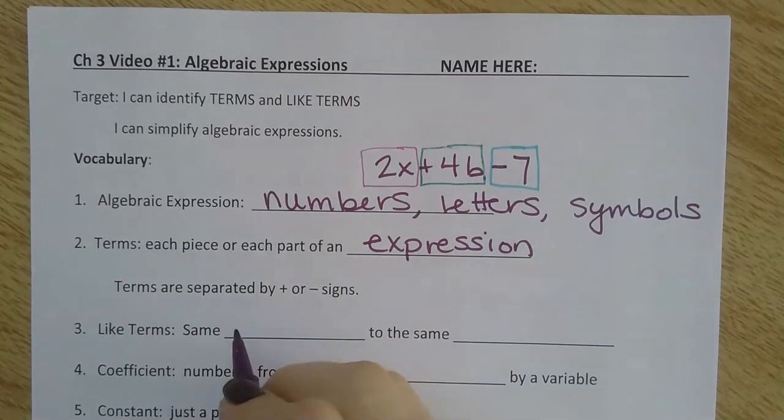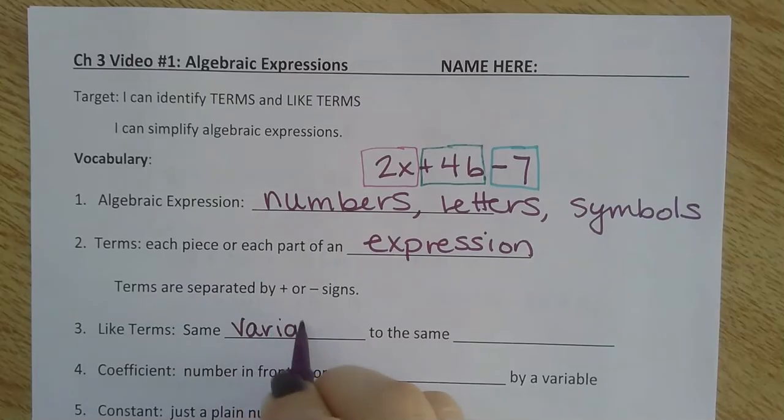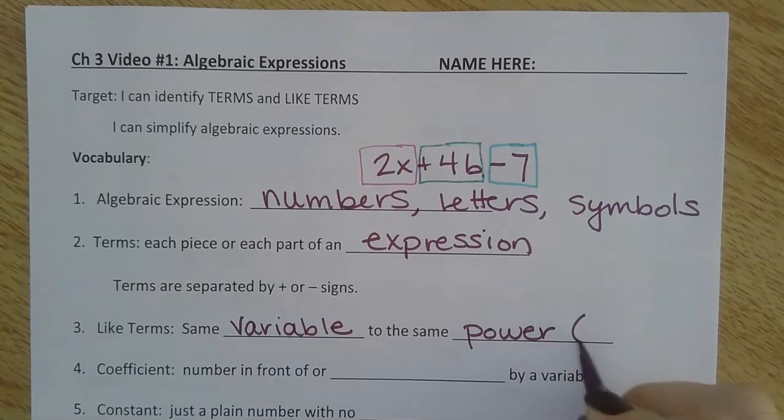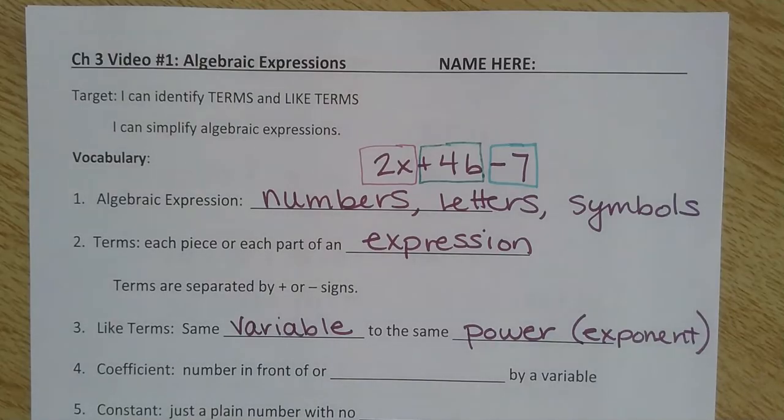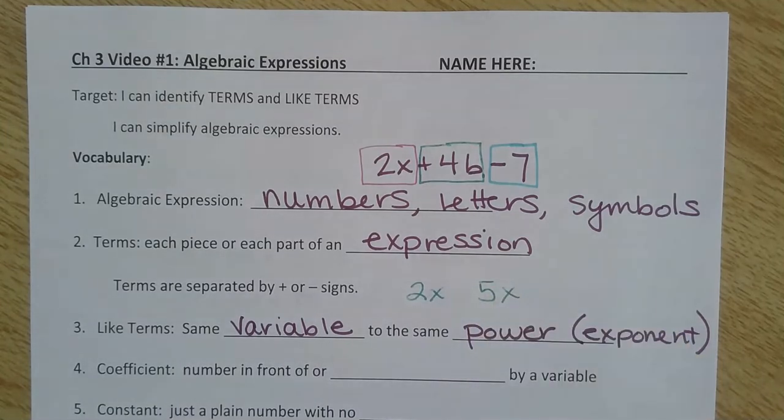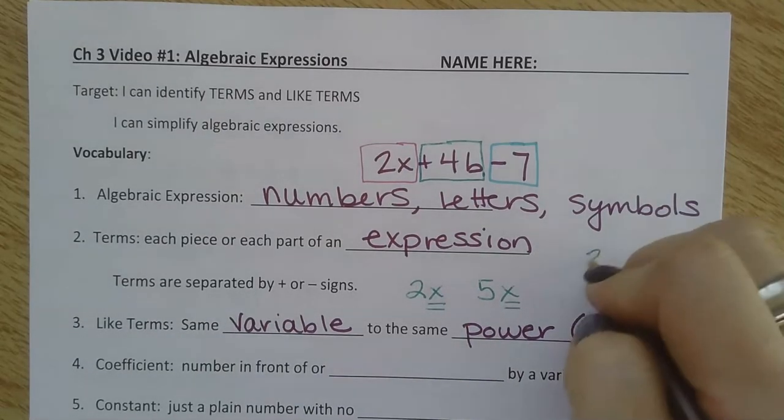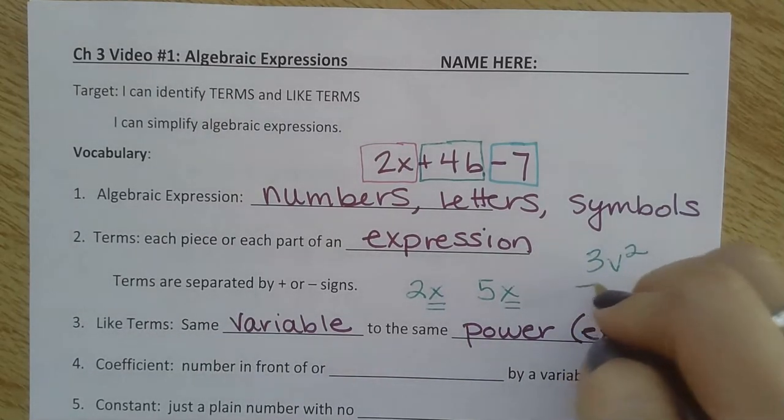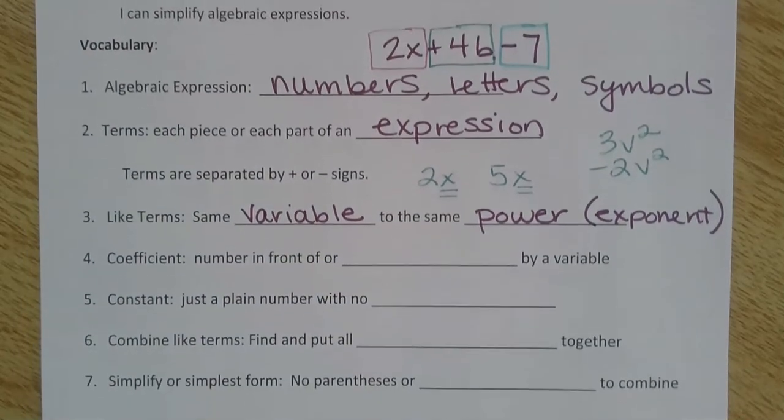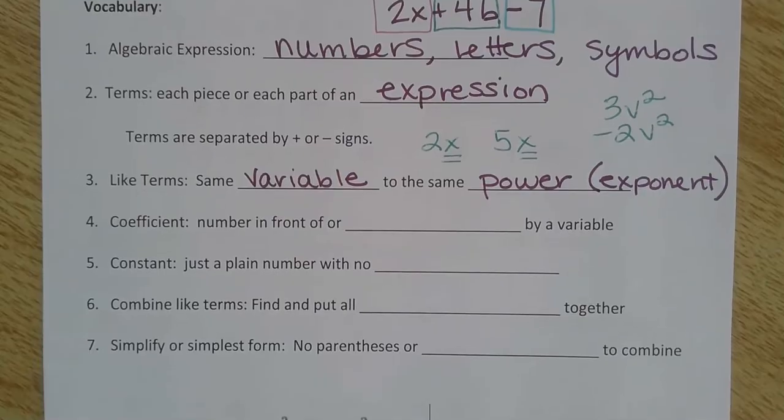Like terms have the same variable to the same power or the same exponent. Examples of like terms would be 2x and 5x because they both have x's to the power of 1. Or 3v squared and negative 2v squared would be like terms because they both have a v squared. We'll be doing a lot of combining like terms, finding those that go together.